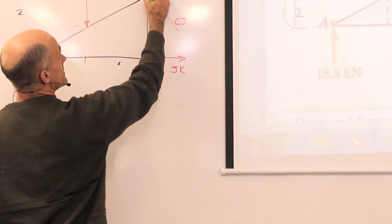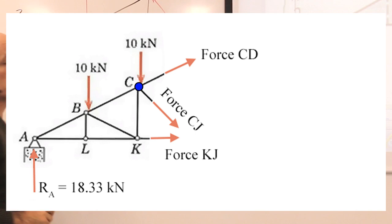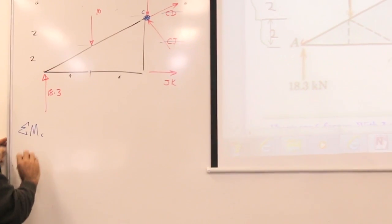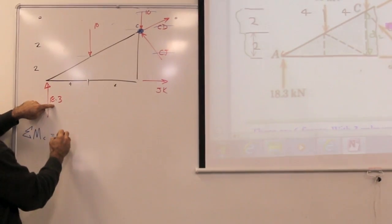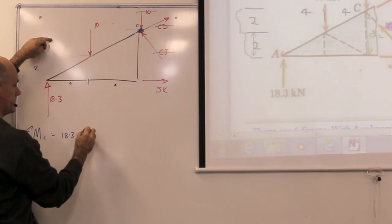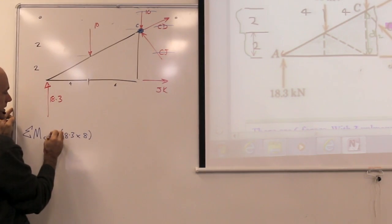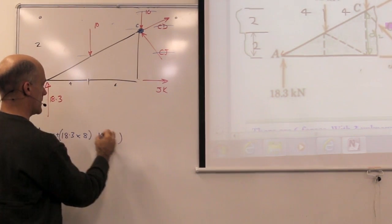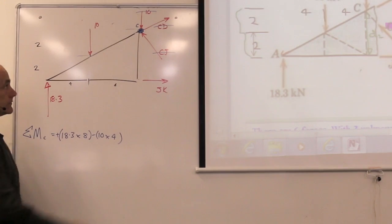Our first idea is to do a moment on point C. If we take a moment at point C, that will eliminate these two forces. Out of the moment equation, it will also eliminate the 10kN force because all of those three go through point C. So now when I do a moment equation, sum of all the moments at C will be 18.3 times 8. The perpendicular distance is 8. This is causing clockwise, so that's positive. 10 times 4, negative. That's anticlockwise.